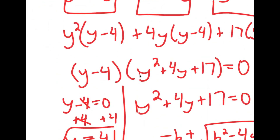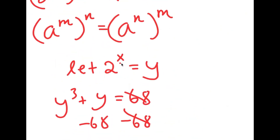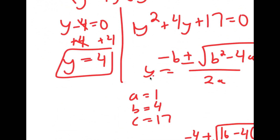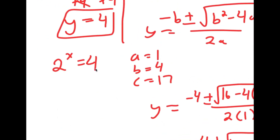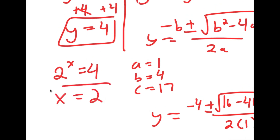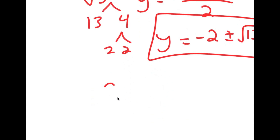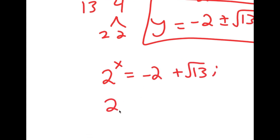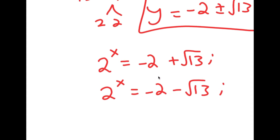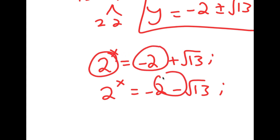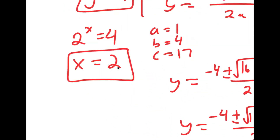Now that we know these values of y — remember we let 2 to the power of x equal y — I get 2 to the power of x equals 4, and this is obviously x equals 2, so that's one solution. I also get 2 to the power of x equals negative 2 plus root 13i, and 2 to the power of x equals negative 2 minus root 13i. Since we can't take a positive base and make it equal a negative number, there are no solutions for these two, and x equals 2 is my only solution.